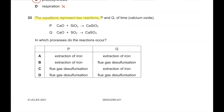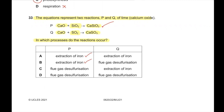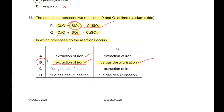Question number 33. Calcium oxide reacts with silicon dioxide to produce calcium silicate (reaction P), and with sulfur dioxide to produce calcium sulfite (reaction Q). In the extraction of iron, calcium oxide reacts with silicon dioxide, so reaction P occurs there. Sulfur dioxide being neutralized by calcium oxide is done in the process of flue gas desulfurization. So B is the correct answer. Remember: CaO + SO₂ is flue gas desulfurization; CaO + SiO₂ is from iron extraction.